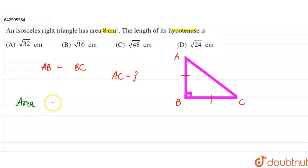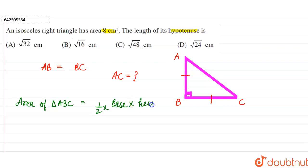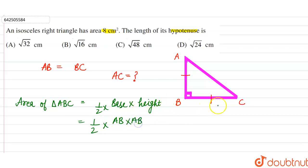We know that the area of a right angle triangle is equal to half into base into height. Since base and height are equal here, we can say area equals half into AB into AB. The area of the triangle is given as 8 centimeter square.